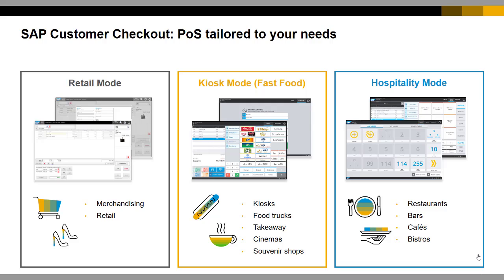SAP Customer Checkout supports three different user interface modes, each optimized for its use case. In the retail mode, you use scanners to scan customer cards and articles. The kiosk mode is optimized for touch to execute the sales process very fast. In the hospitality mode, you start with a table, and it supports tip management functionality. We will now look at each mode in more detail.